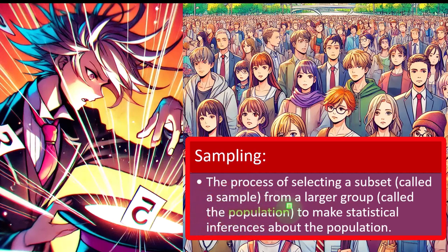Let's break that down in more detail. We have the population — the larger group from which we are taking the sample, often represented with a large N in our calculations. We then take a sample, which is a subset of that larger population, often because we don't have the time, resources, or possibly the ability to test the entire population. The sample is often represented with a small n in our calculations.